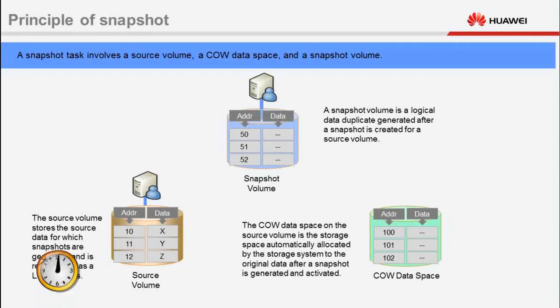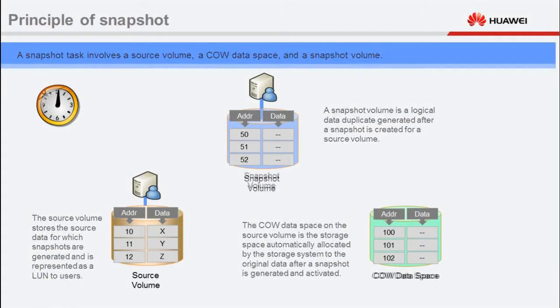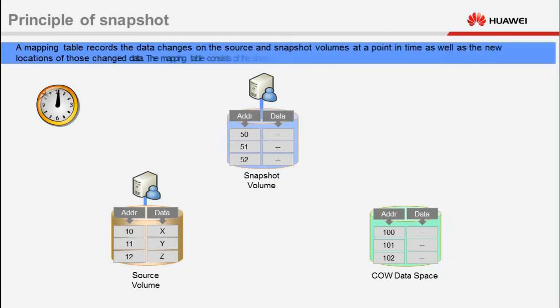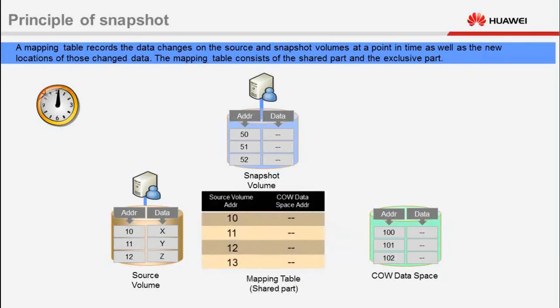After creating a snapshot, users can determine a point in time for activating the snapshot. In a snapshot task, the COW technology and a mapping table organically combine a source volume, a COW data space, and a snapshot volume. The COW technology is used to save data changes on the source volume. A mapping table records the data changes on the source and snapshot volumes as well as the new location of the changed data. The mapping table consists of a shared and exclusive part.